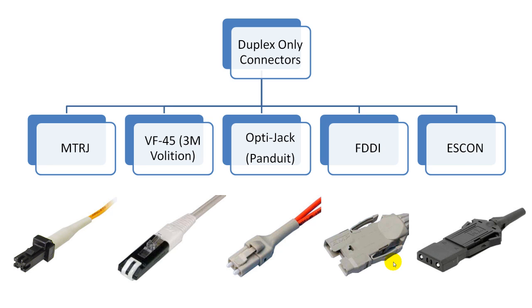FDDI and ESCON connectors are both duplex connectors with 2.5 mm ferrules. They are often used to connect equipment from a wall outlet and can be made to connect to SC or ST connectors with adapters.